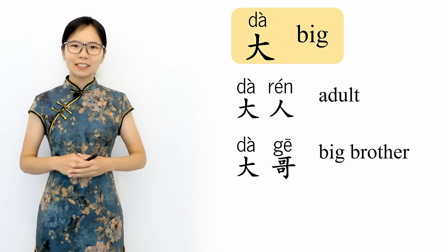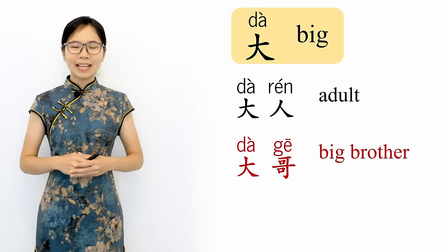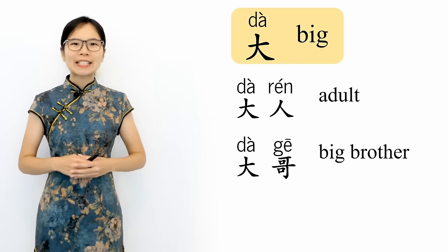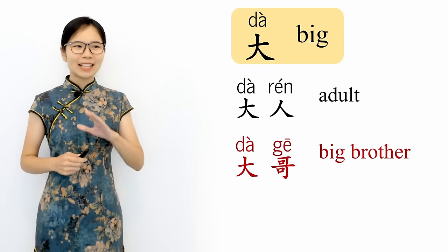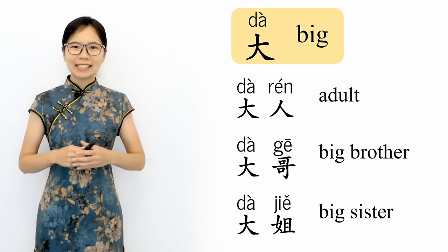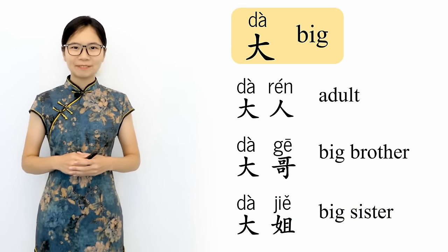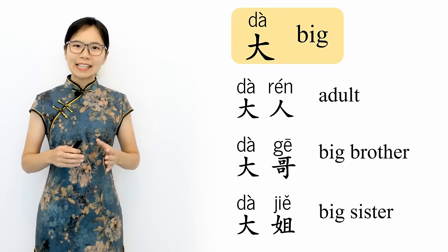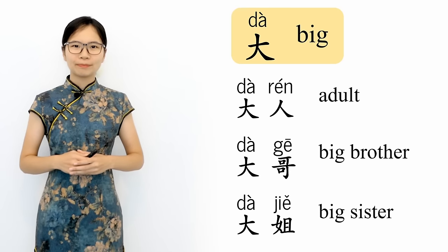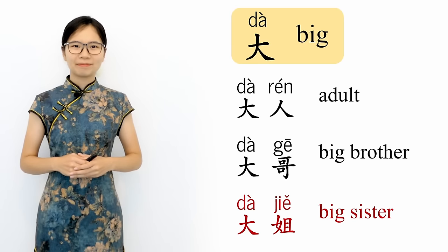Next is 大哥. 哥 is the character for older brother, and 大哥 means big brother. 大哥 is used to refer to your oldest brother, and it can also be used to address a man who is somewhat older than you. 大哥, big brother. Our last word is 大姐. 姐 is the character for older sister, and 大姐 means big sister. Similar to 大哥, 大姐 is used to refer to your oldest sister or to address a woman who is somewhat older than you. 大姐, big sister.